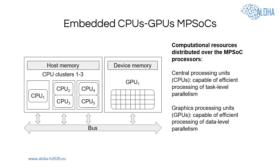Many modern embedded devices are based on embedded CPUs, GPUs, multiprocessor systems-on-chip, and MPSOCs — complex integrated circuits that consist of processing elements with specific functionalities. Due to their specific design, MPSOCs offer energy-efficient and high-performance solutions for applications running on embedded devices. To ensure high-throughput execution of a CNN on embedded CPUs, GPUs and MPSOCs, the CNN workload should be efficiently distributed among the processors available in the MPSOC.